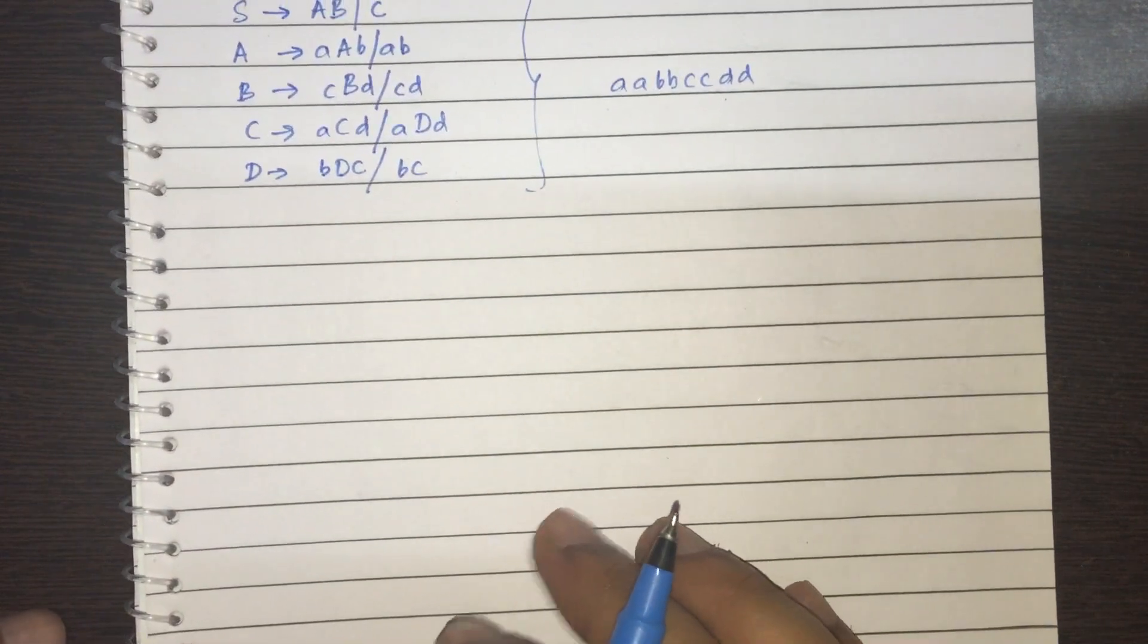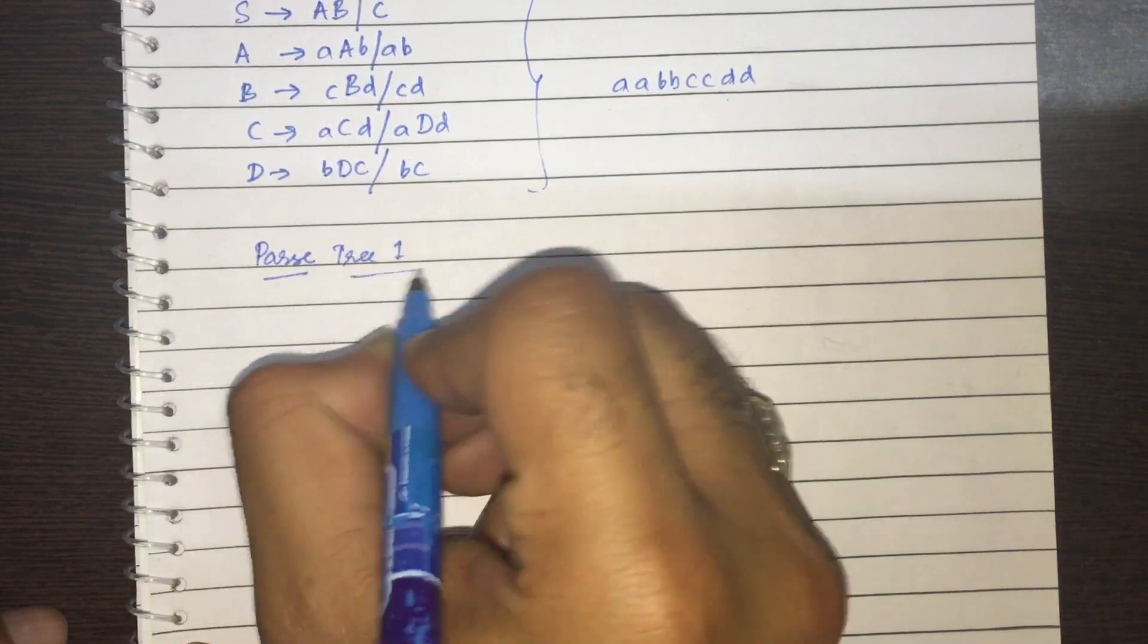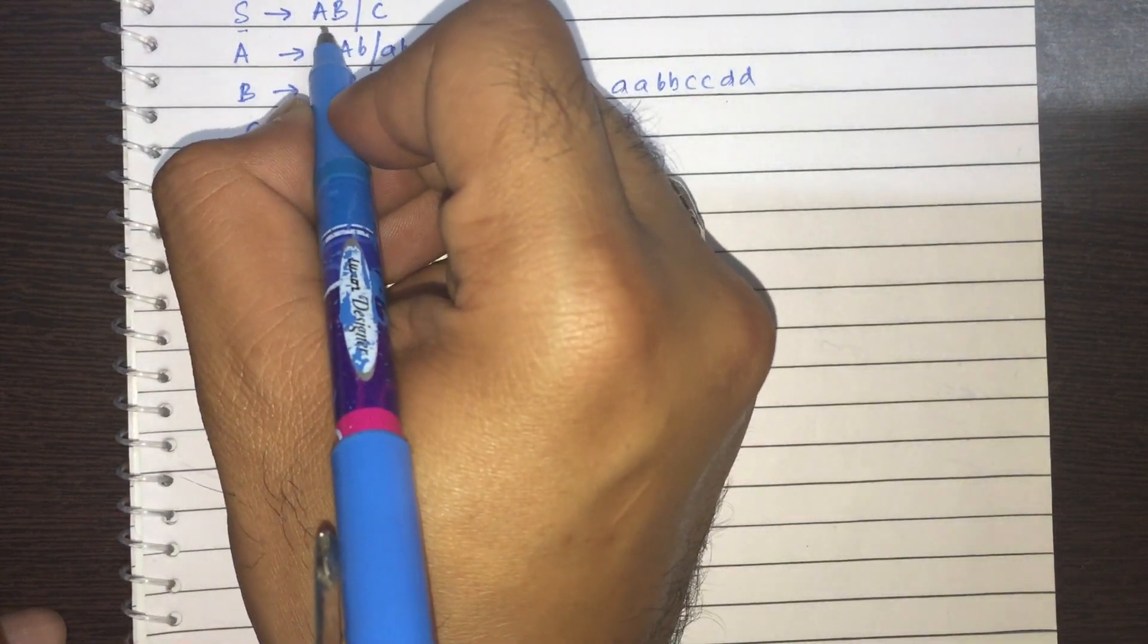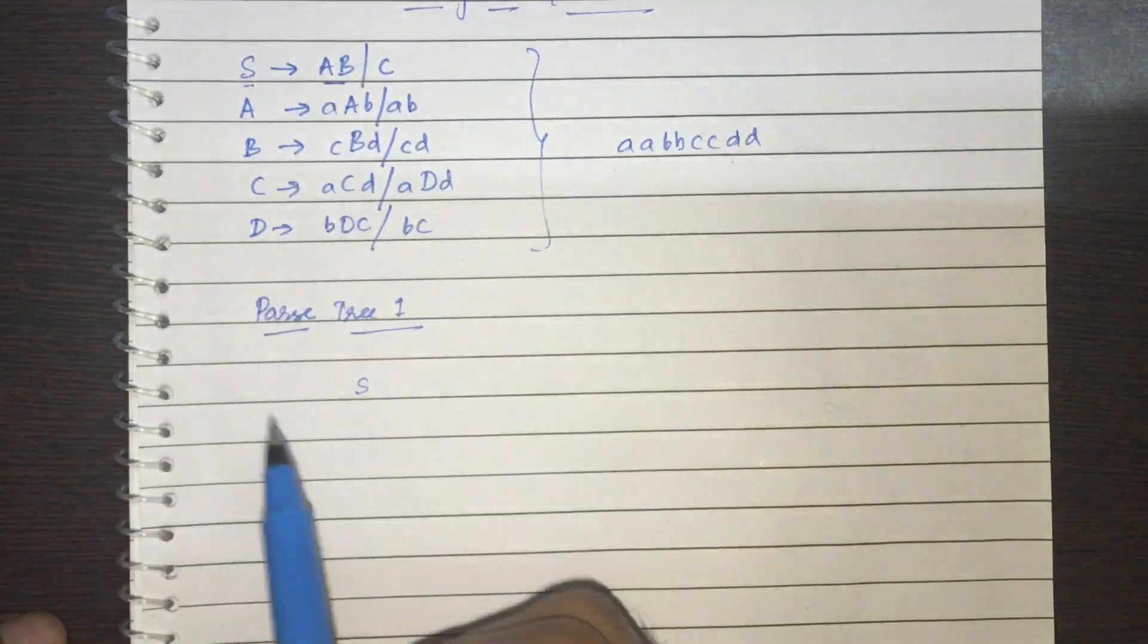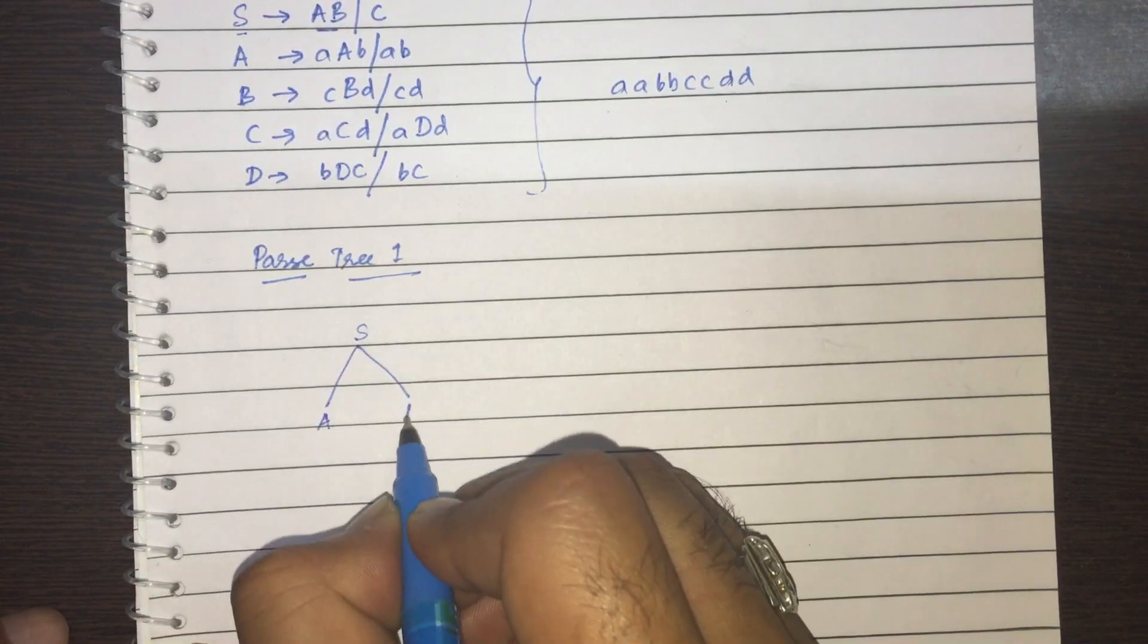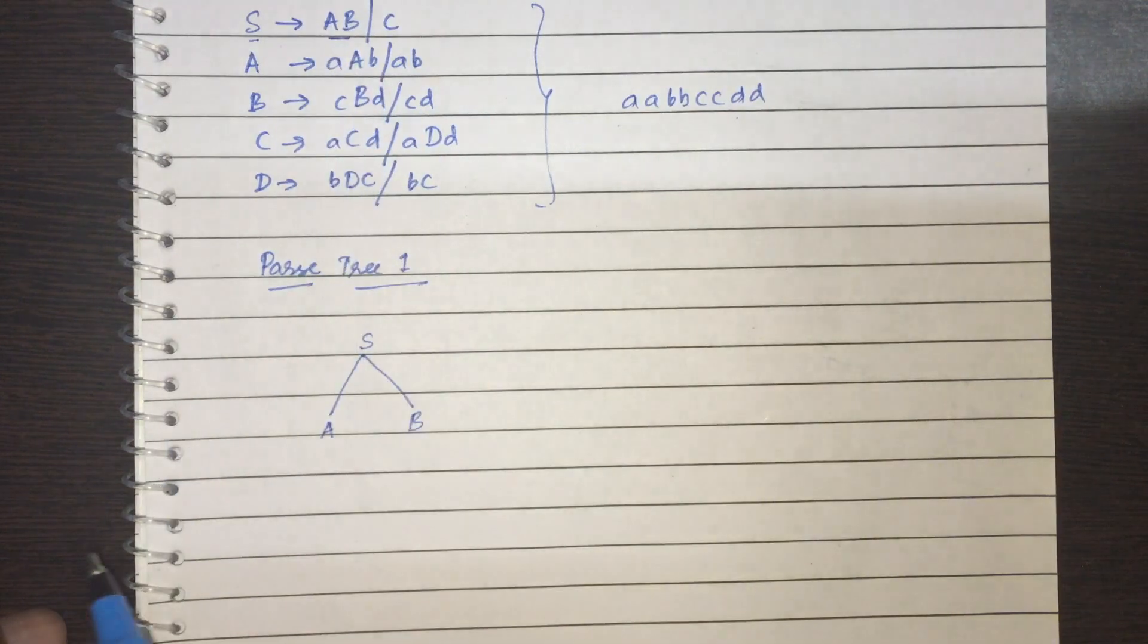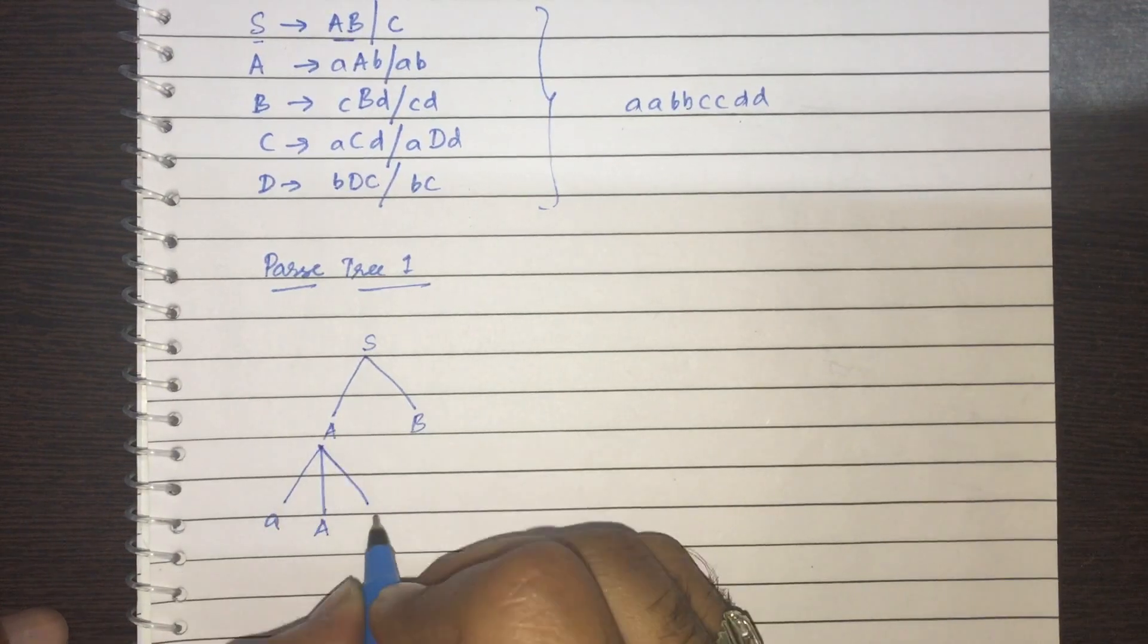So let's construct parse tree. Let me construct parse tree 1. So let's start with this production. And I'll consider this. I can either consider A, B or I can consider C. So right now, in this parse tree, I'll consider this A, B. And this A gives A, A, B or A, B. So I'll consider A, A, B.